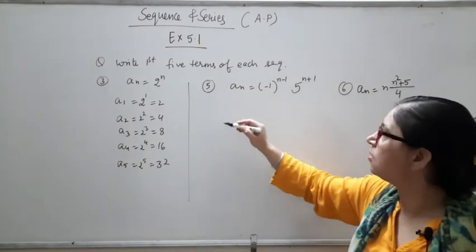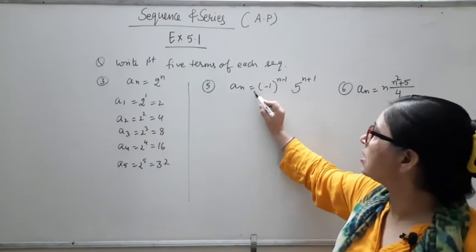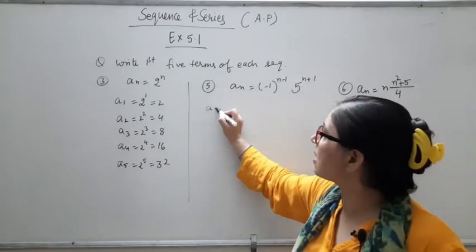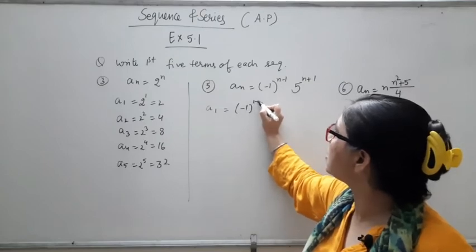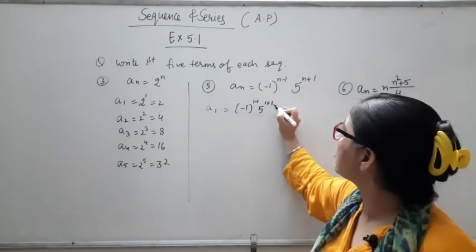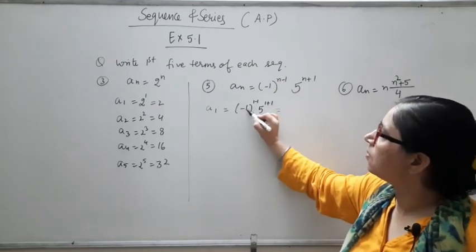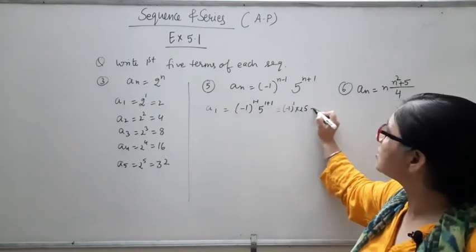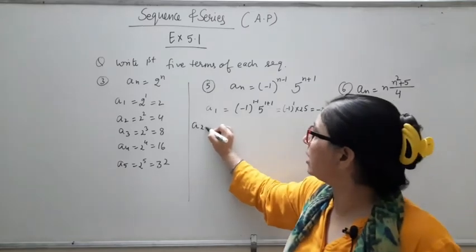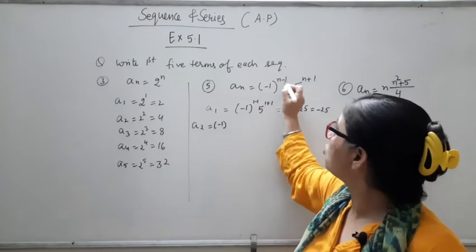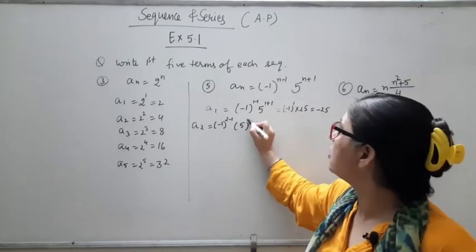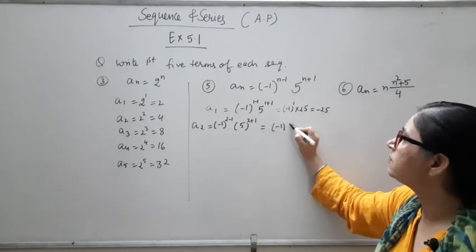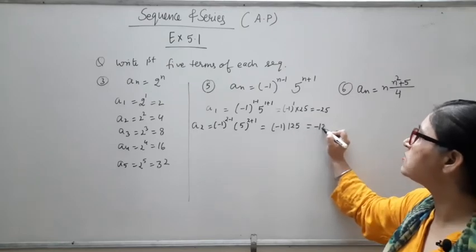Question 5: An = (−1)^(N−1) × 5^(N+1). For A1: (−1)^0 × 5^2 = 1 × 25 = 25. For A2: (−1)^1 × 5^3 = −1 × 125 = −125. You can similarly find A3 and A4 yourself by substituting N = 3 and N = 4.